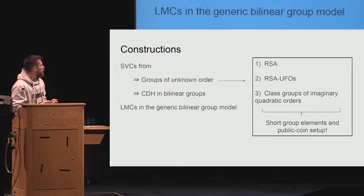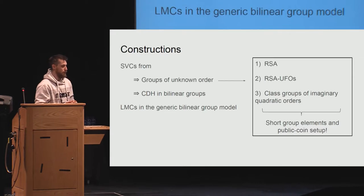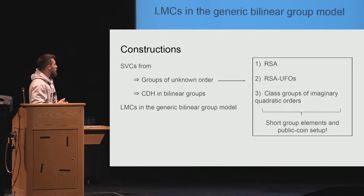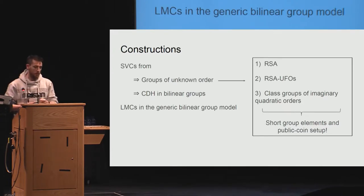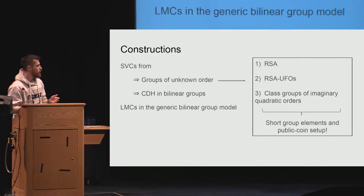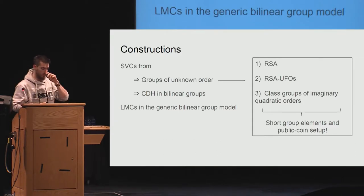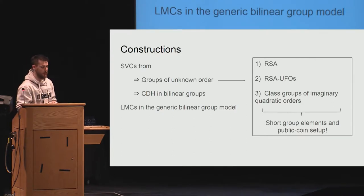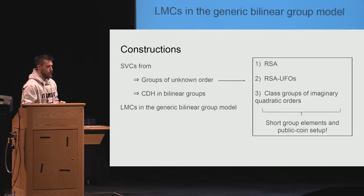For the construction, we give two constructions of sub-vector commitments: one from groups of unknown order and one from CDH in bilinear groups. We also give one construction of linear map commitments in the generic bilinear group model. Groups of unknown order are pretty self-explanatory: they are groups where the order is unknown. The classical example is RSA groups, where you don't know the order unless you can factor the large composite.